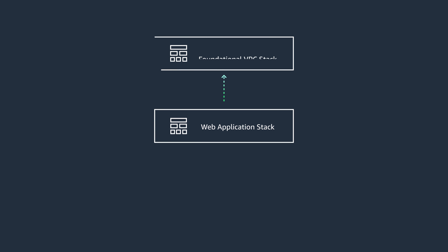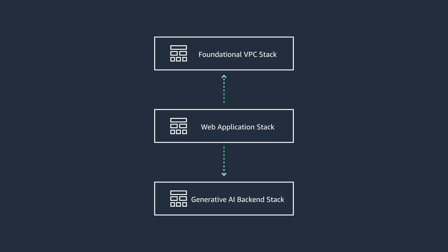Let's take a look at the architecture pattern leveraging the CDK. There are two main components: the web app front-end and the back-end. Within the CDK, you define three stacks — a foundational VPC stack, which helps build the foundational elements like your VPCs, subnets, and security groups. The web app stack includes all the services required to build your web application, while the generative AI backend stack includes the API for orchestrating and inferencing your GenAI LLM.